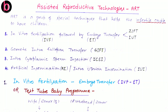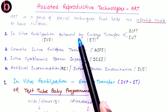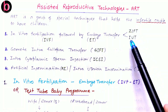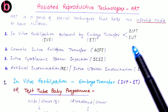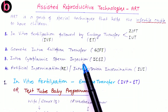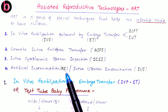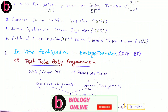All these techniques are categorized under ART. Broadly, ART is categorized into four groups: first, In Vitro Fertilization or IVF followed by Embryo Transfer (ET), which is further categorized into ZIFT (Zygote Intra Fallopian Transfer) and IUT (Intrauterine Transfer); second, Gamete Intra Fallopian Transfer or GIFT; third, Intracytoplasmic Sperm Injection or ICSI; and fourth, Artificial Insemination (AI) or Intrauterine Insemination (IUI).